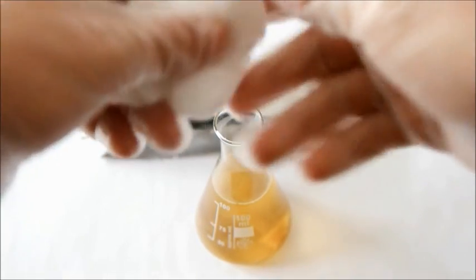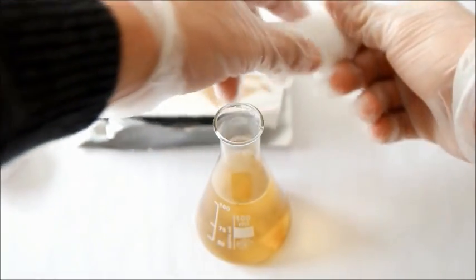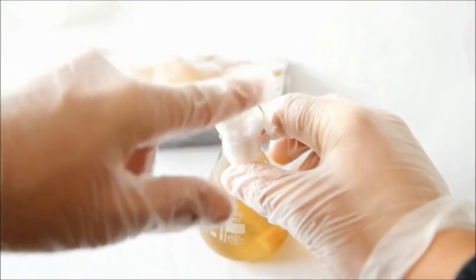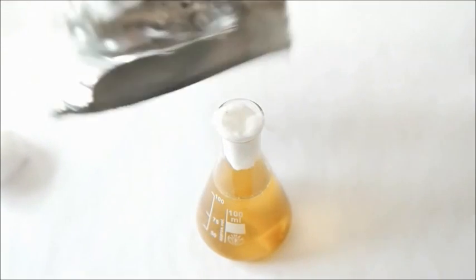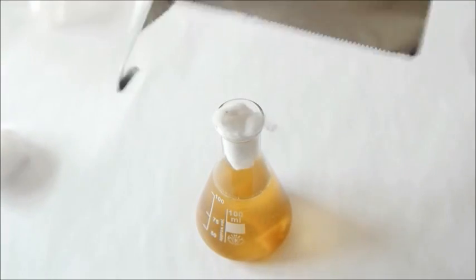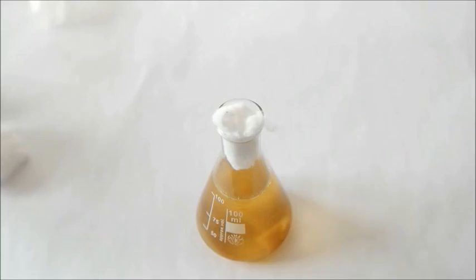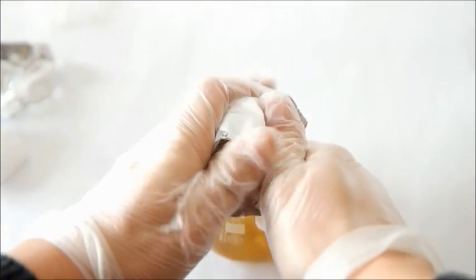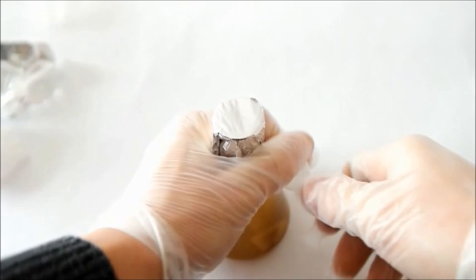Now close your Erlenmeyer flask by putting a big cotton ball in it and then put a piece of aluminum foil on it. It doesn't have to be air proof but just close it like this.